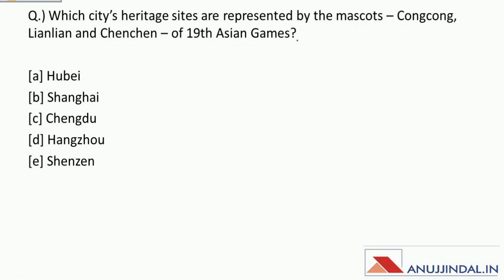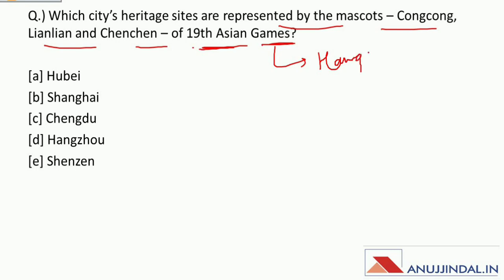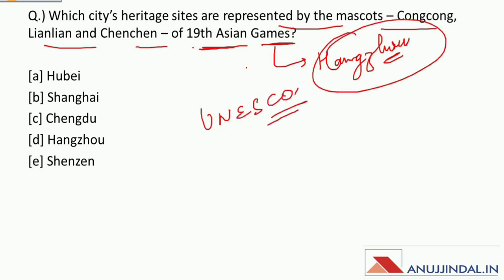Which city's heritage sites are represented by the mascots Kong Kong, Lian Lian, and Chen Chen of the 19th Asian Games in China? The mascots represent the UNESCO World Heritage Sites of Hangzhou, the host city of the 19th Asian Games. The correct answer is Hangzhou.